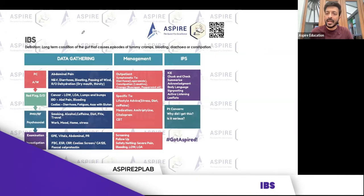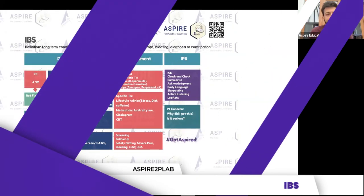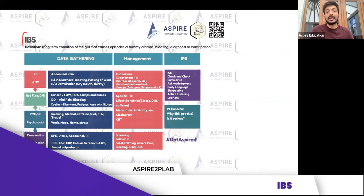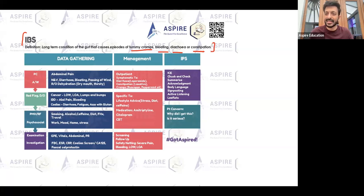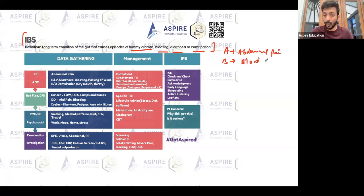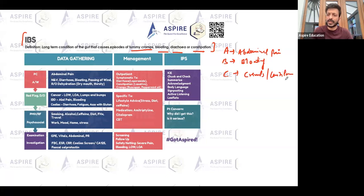IBS — irritable bowel syndrome — is a long-term condition of the gut that causes episodes of tummy cramps, bloating, diarrhea, and constipation. We remember it with the mnemonic ABC: A is for abdominal pain, B is for bloating, and C is for cramps or constipation, though sometimes patients present with diarrhea as well.